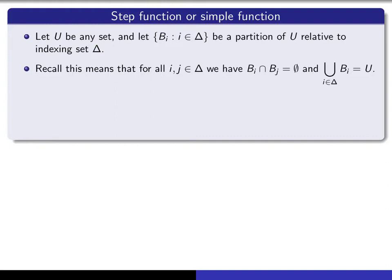I've made a small mistake here. I haven't indicated that i and j should be different. If we give ourselves two different elements of our indexing set, then the intersection of the corresponding sets B_i and B_j should be empty. But if you take the union of all of the members of the partition, that should give you the entire set U. So to say that it's a partition informally is just to say that we've chopped up our entire set U as a disjoint union of these sets B_i.